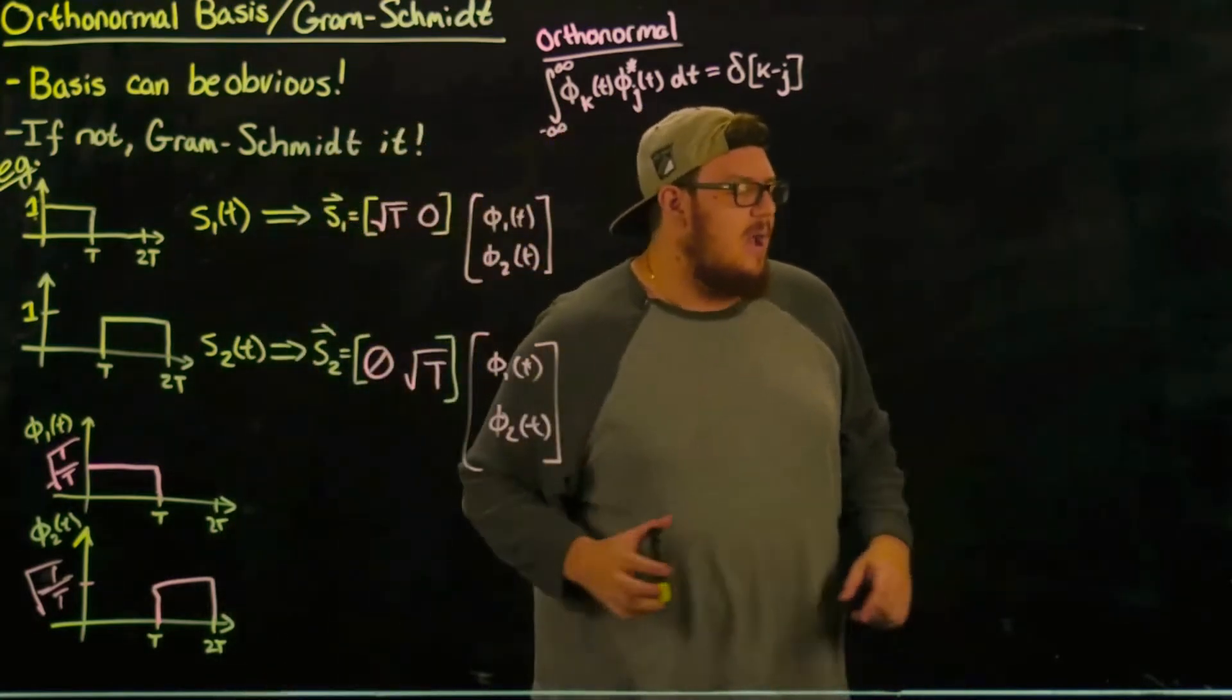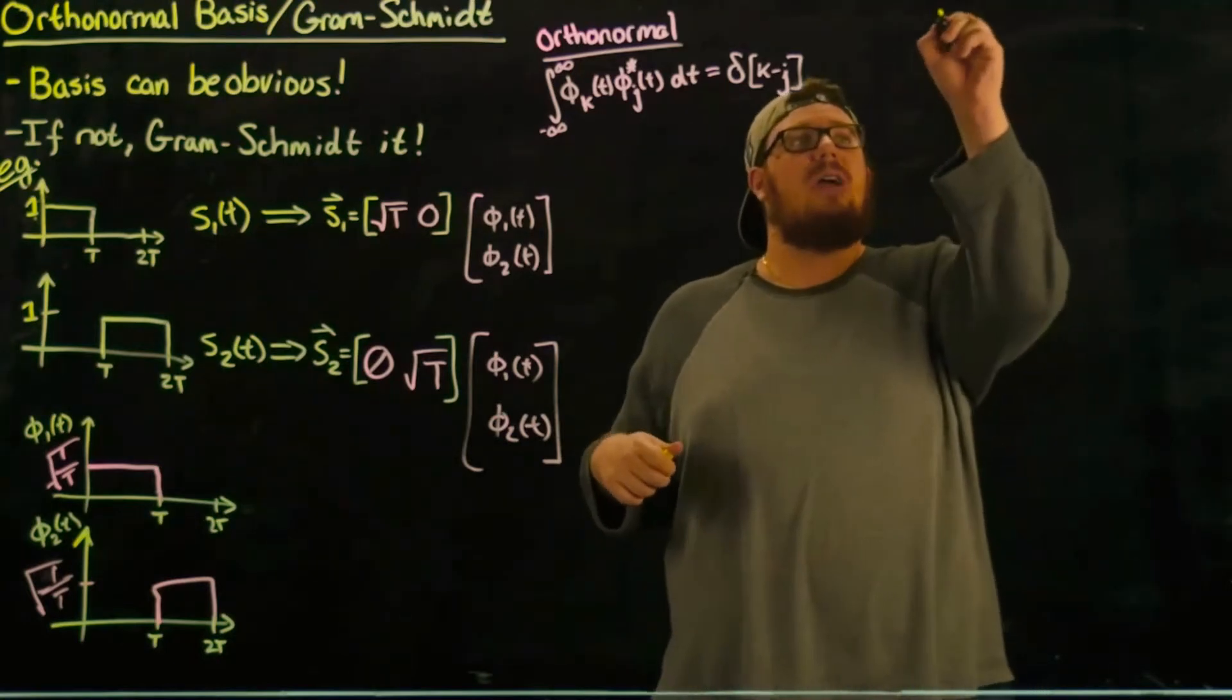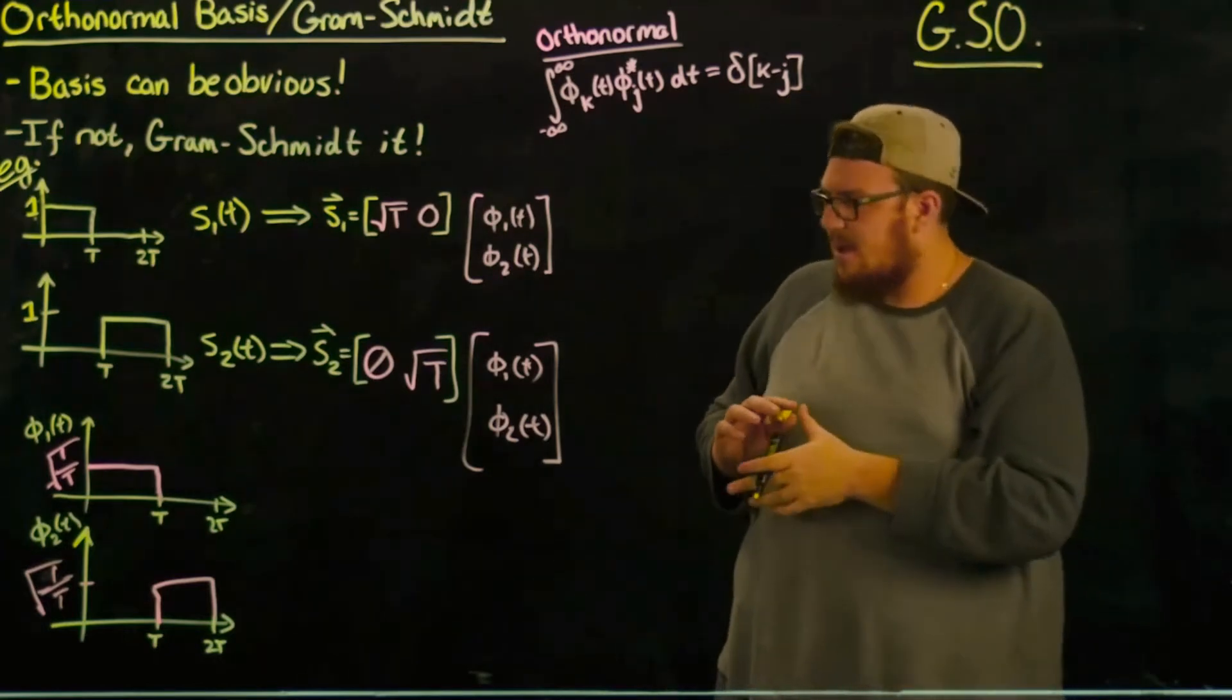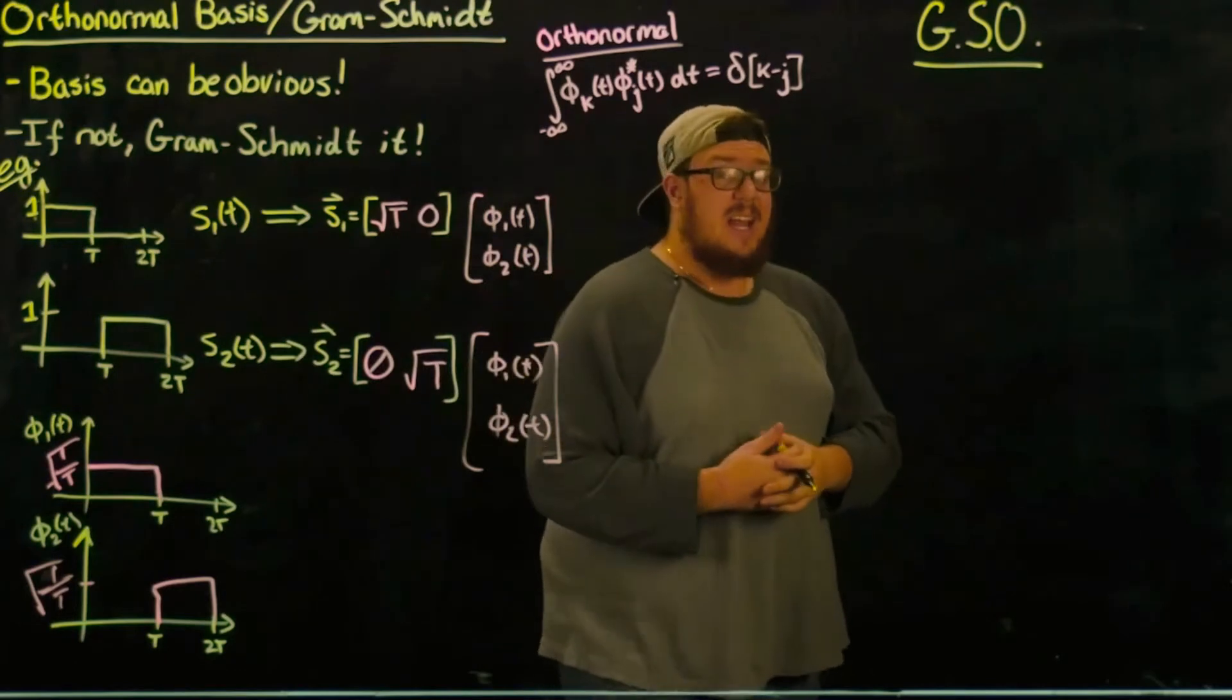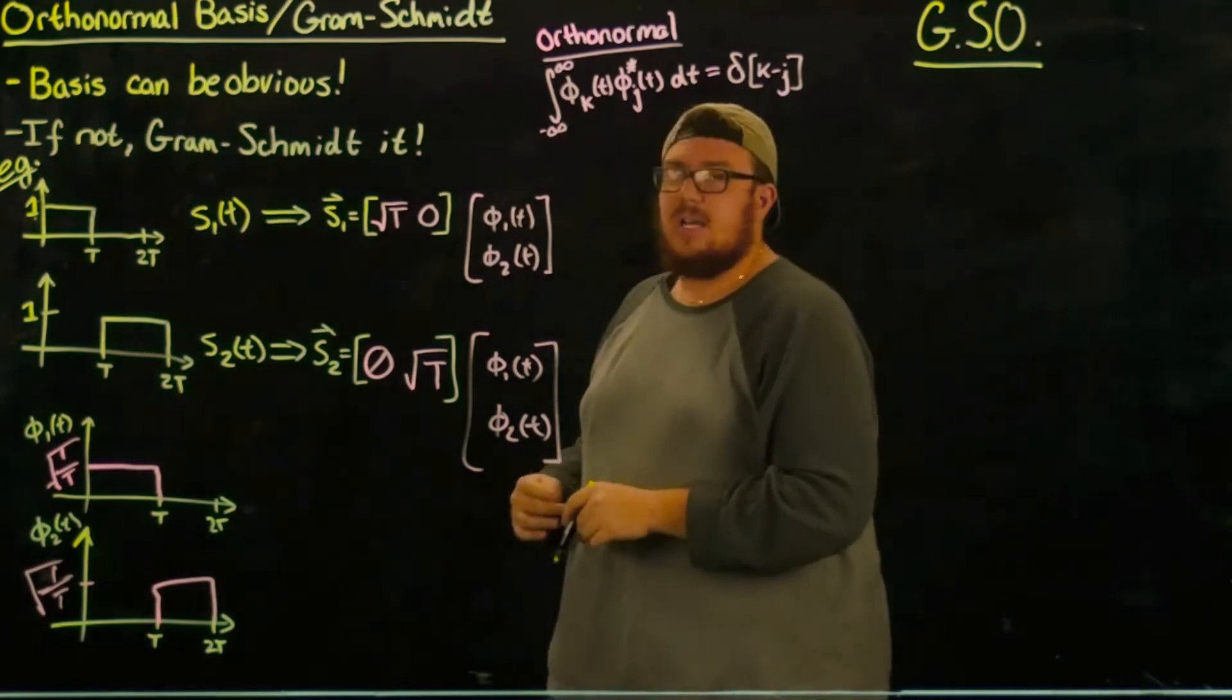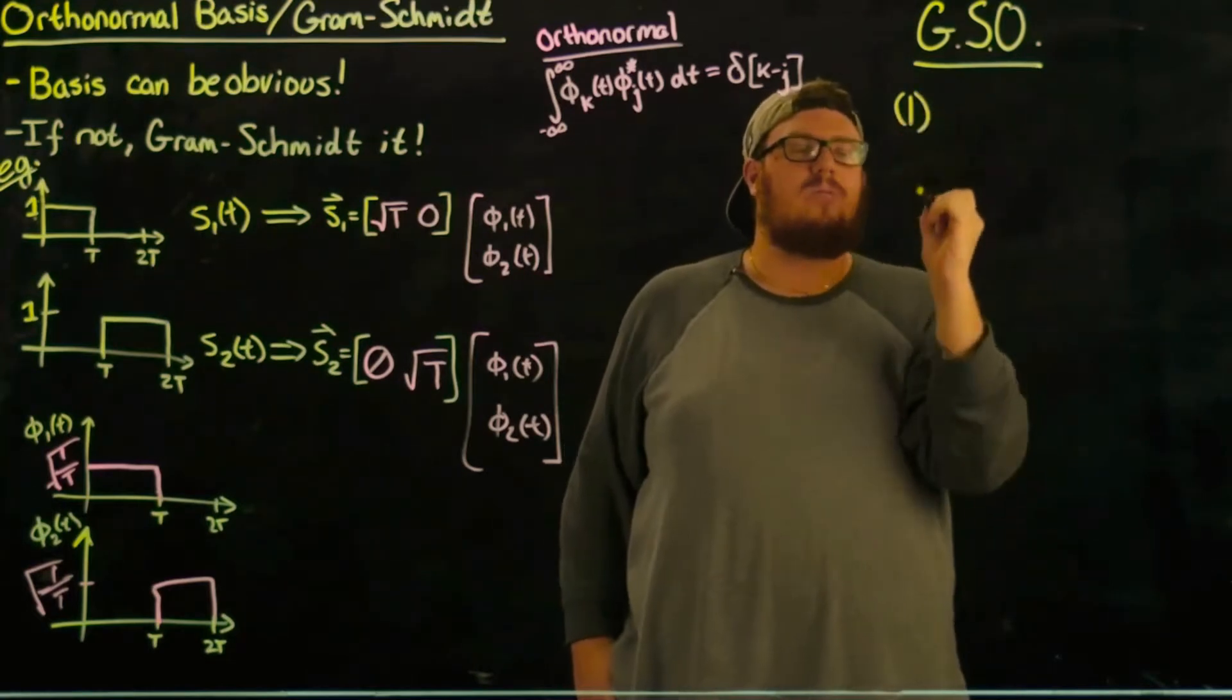So for those cases we have what's called the Gram-Schmidt orthogonalization process, which I'm going to abbreviate as GSO. And what this basically is is it's an algorithm for making an orthogonal basis.